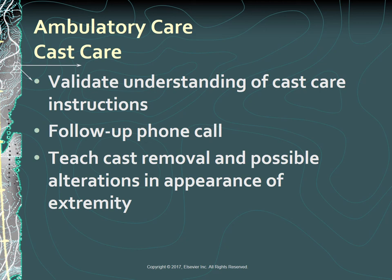Validate the patient's and the caregiver's understanding of instructions before discharge. A follow-up phone contact is appropriate and home care nursing visits are warranted, especially for the patient with a body jacket brace. The cast is removed in an outpatient setting. Patients often fear being cut by the blade of the cast saw—reassure them that damage to the skin is unlikely. Teach the patient about possible alterations in the appearance of the extremity; it most likely will be dry, wrinkled, and smaller than the other arm or leg because of a little bit of muscle atrophy.